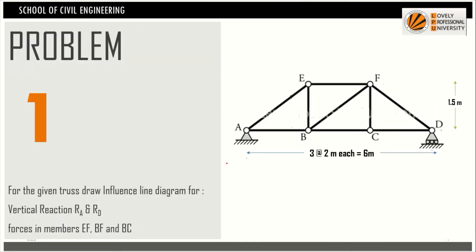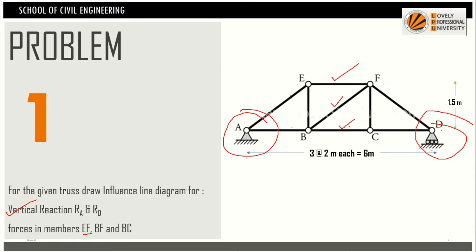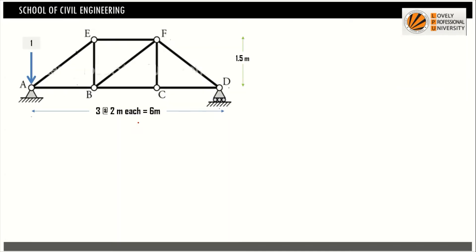We will now start with a numerical problem. In this given truss, we have to calculate the ILD for vertical reactions Ra and Rd, and the forces in members EF (top chord), diagonal member BF, and bottom chord BC.